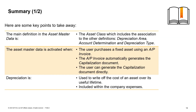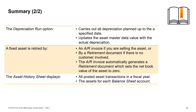Here are some key points to take away. The main definition in the asset master data is the asset class, which includes the association to the other definitions for depreciation area, account determination, and depreciation type. The asset master data record is activated when a user purchases a fixed asset using an AP invoice, which automatically generates the capitalization document; a user also has the option to generate the capitalization document directly. Depreciation is used to write off the cost of an asset over its useful life and is included as a company expense. The depreciation run option carries out all depreciation planned up to a specified date and updates the asset master data value with the actual depreciation. A fixed asset is retired by an AR invoice if selling the asset, or by a retirement document if there is no customer involved. The AR invoice automatically generates a retirement document which sets the net book value of the asset to zero. The asset history sheet displays all posted asset transactions in a fiscal year and the assets for each balance sheet account.